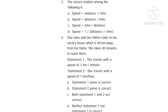Third question: the correct relation among the following is — option A: speed is equal to distance into time. Option B: speed is equal to distance by time. Option C: speed is equal to time per distance. Option D: speed is equal to one divided by distance into time. The correct answer is option B — speed is equal to distance per time.